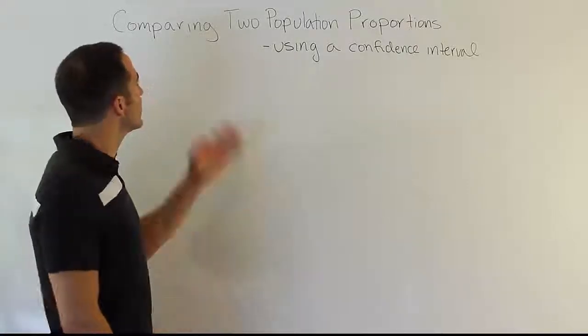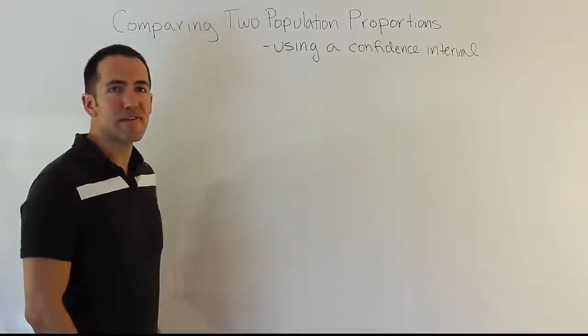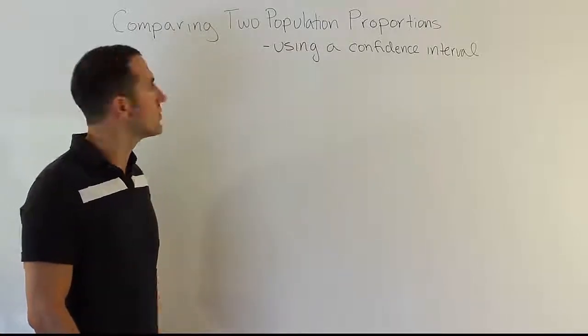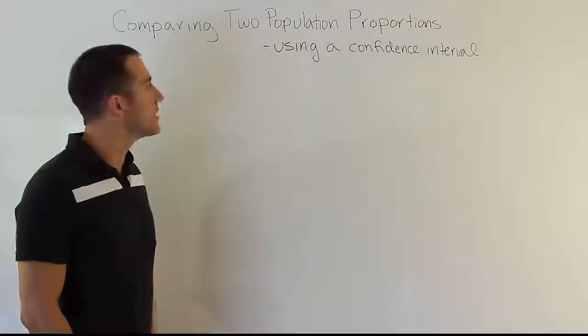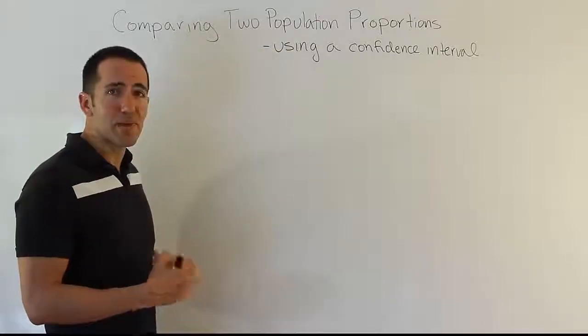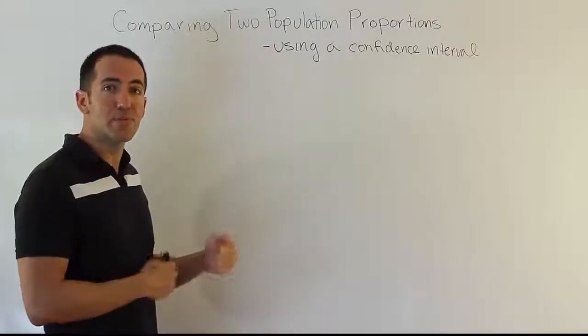In this video, we're looking at comparing two population proportions, and we're going to be using a confidence interval to do this. I'm going to walk you through the steps that we use to do this comparison of two population proportions. We've already talked about how to compare means, and now we want to do the same thing. We want to compare two groups' population proportions.